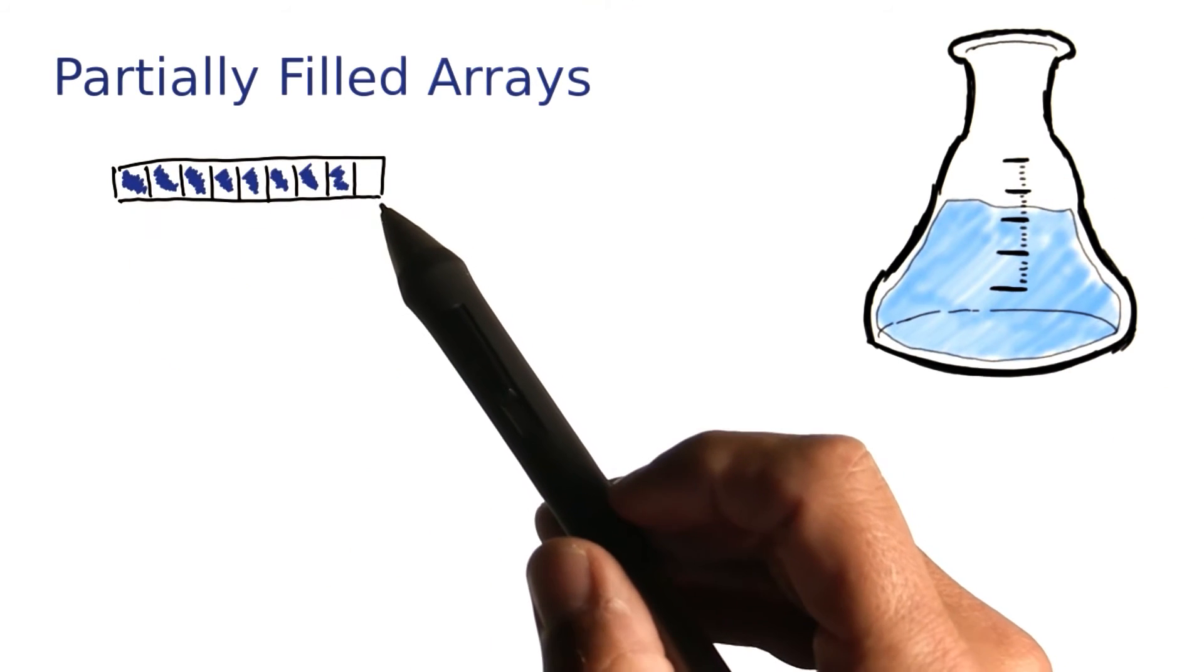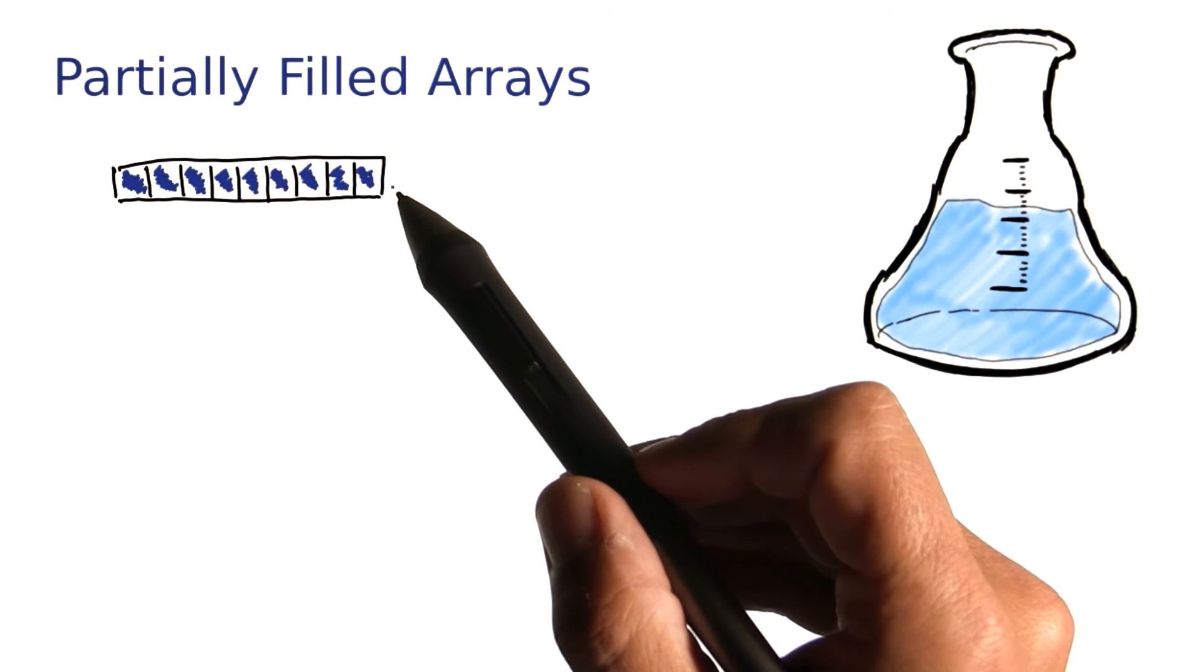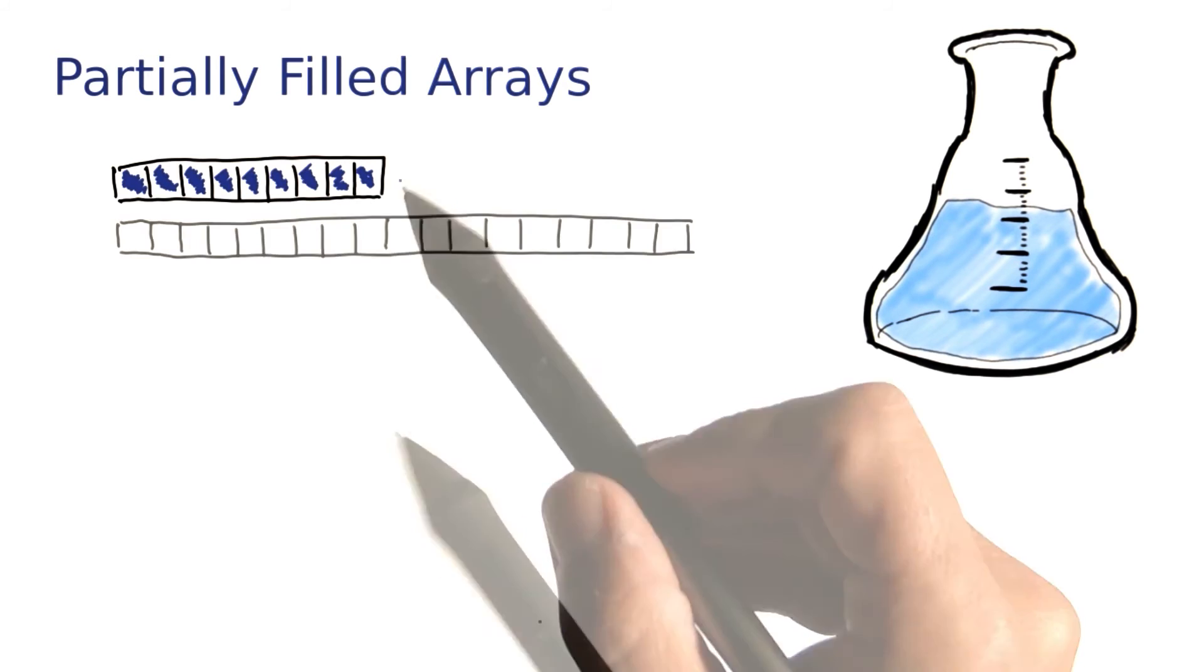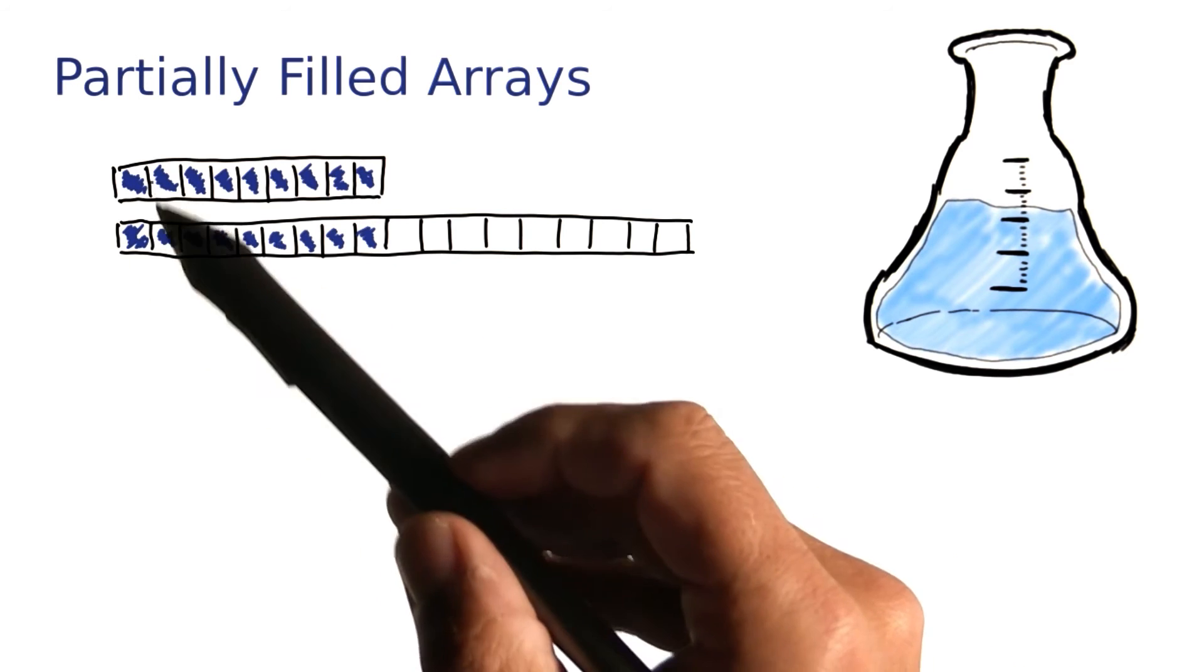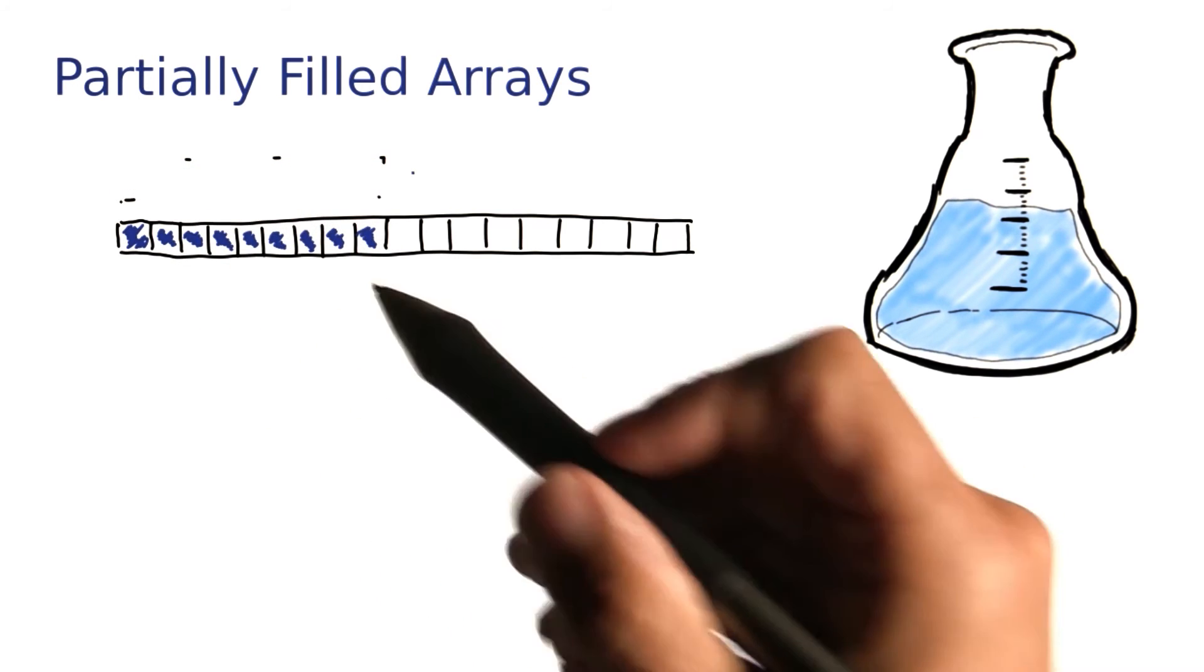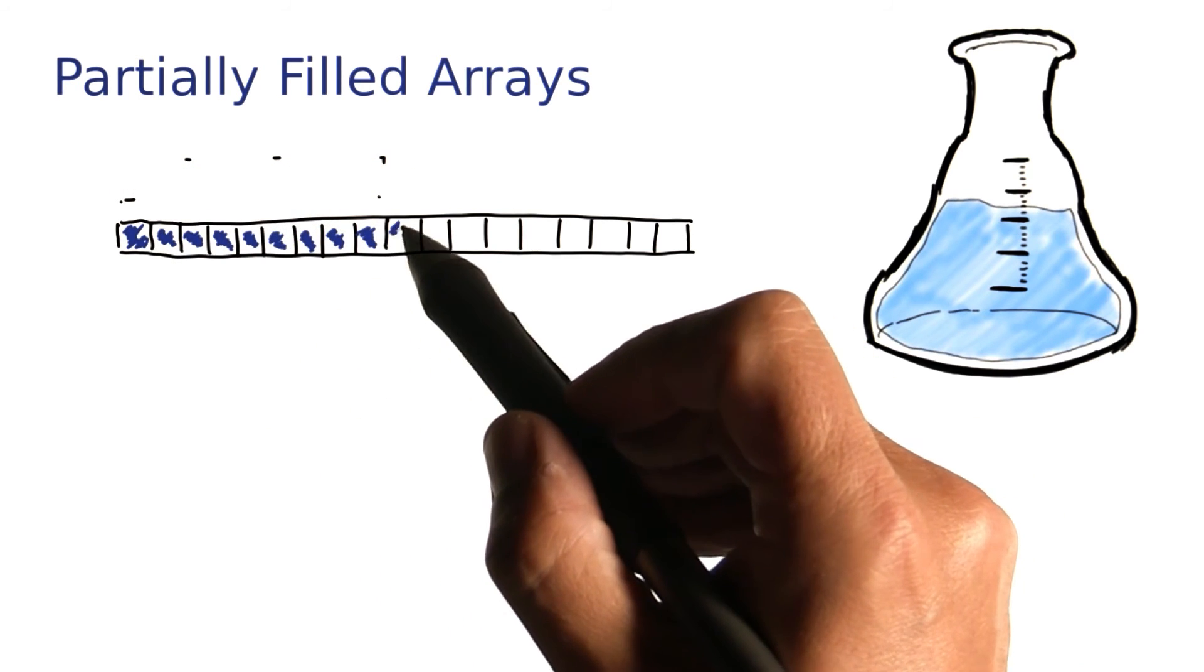So here's my array. It's almost full. Now it's completely full. I'd like to add another element. So I'll get myself an array that's twice as long. Copy over all the values. And now I can forget about the old array and insert my next element over here.